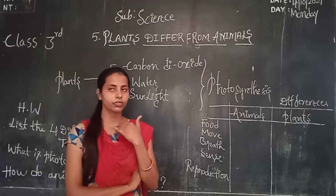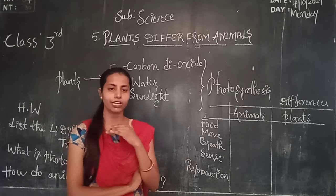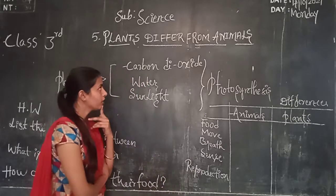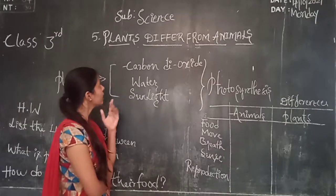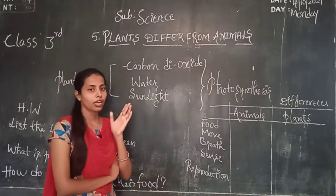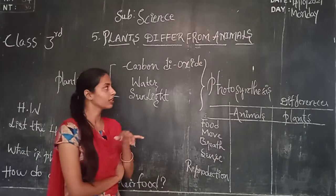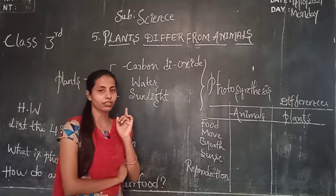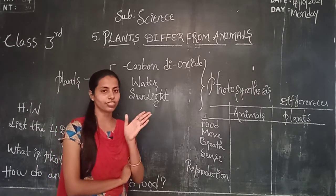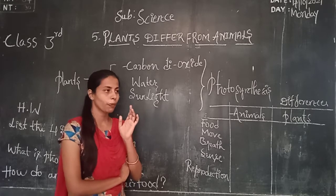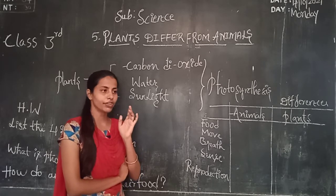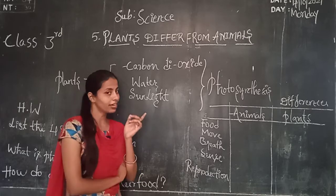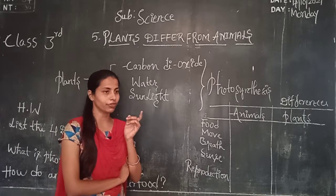There are so many differences between living and non-living things. We are going to see the differences between living and non-living things. Plants are living things, animals are living things. We are going to start the 5th chapter.